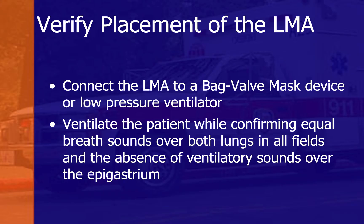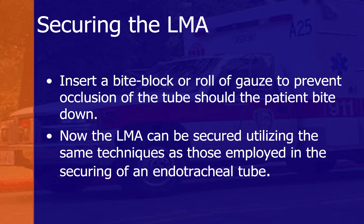Confirm equal breath sounds in all lung fields and the absence of ventilatory sounds over the epigastrium to ensure proper gas exchange. Use a stethoscope as in standard endotracheal tube confirmation. Secure the airway using a bite block to prevent the patient from biting down on the tube. A roll of gauze between the teeth also helps protect the airway. Some LMAs have a built-in bite blocker. The LMA can be secured using the same technique as for an endotracheal tube.